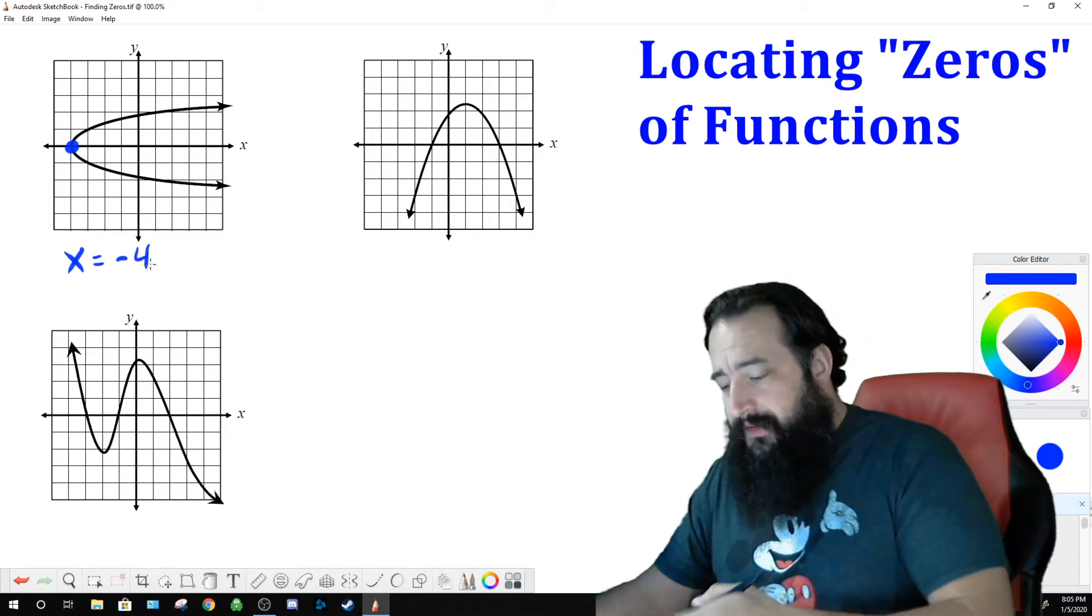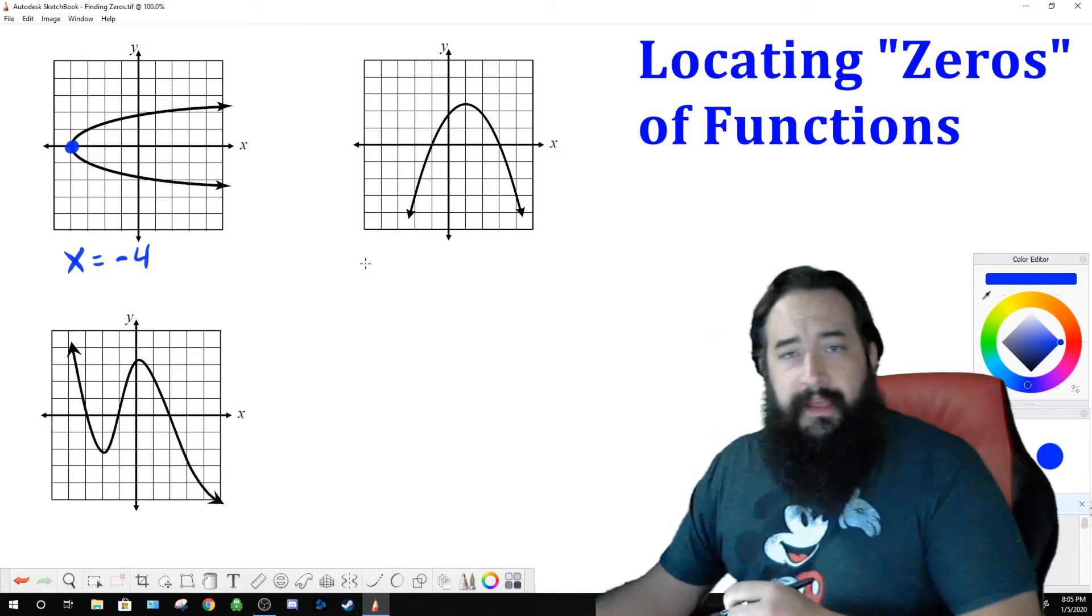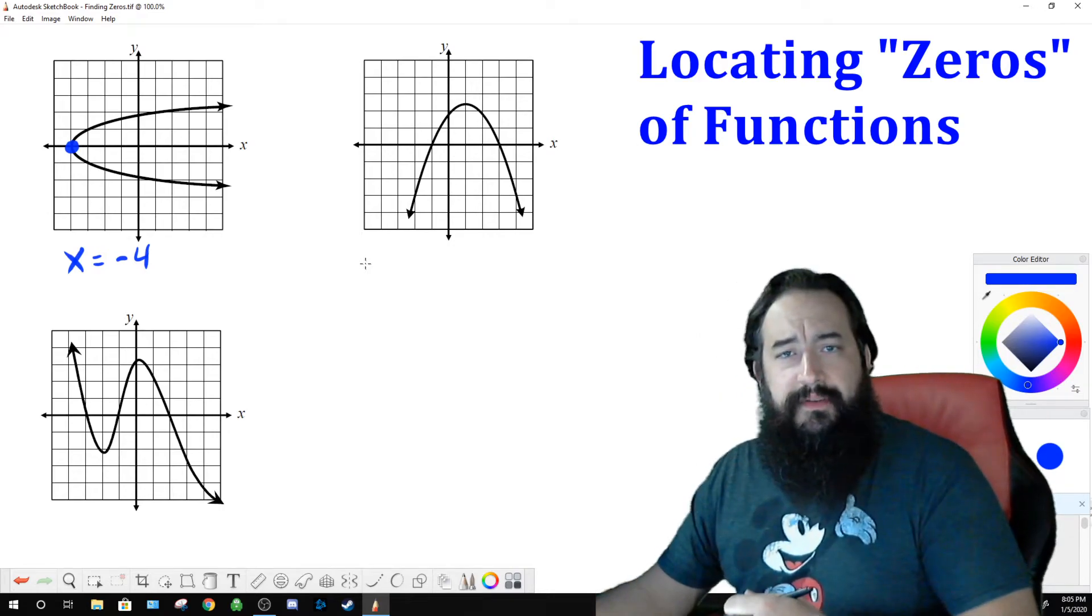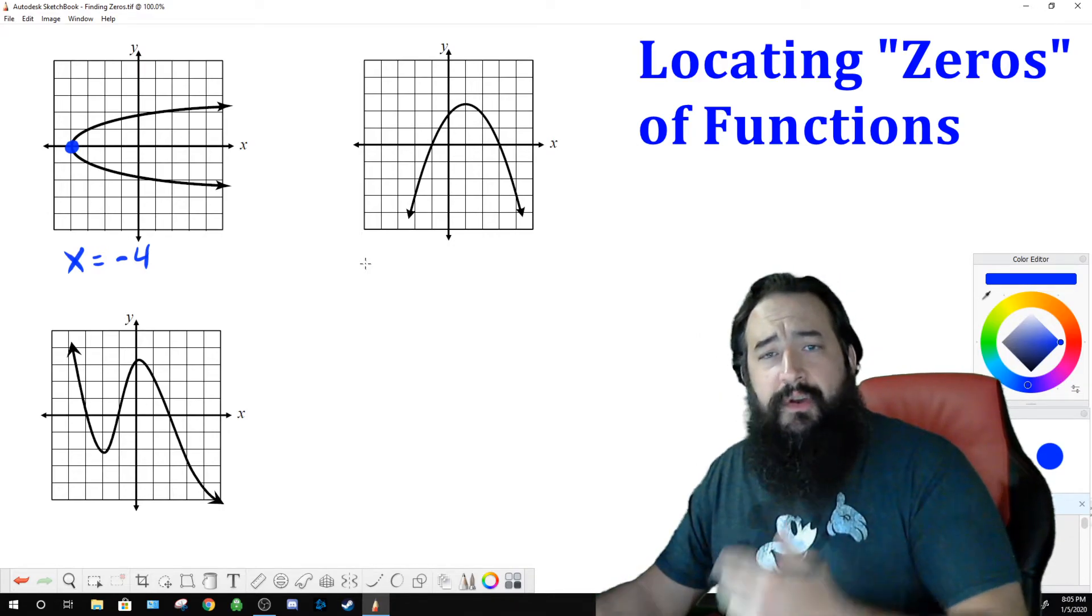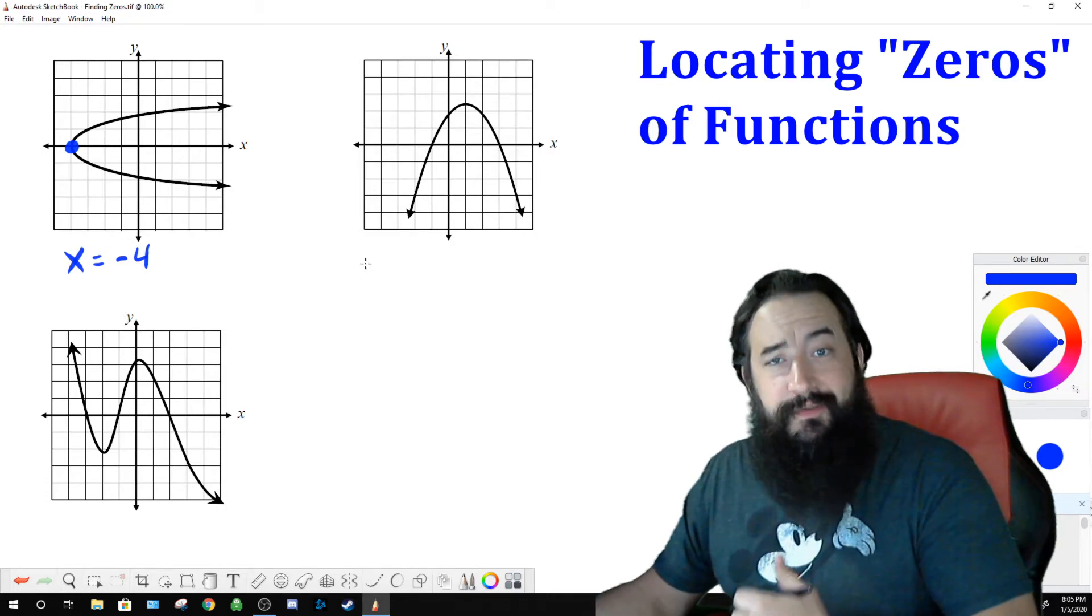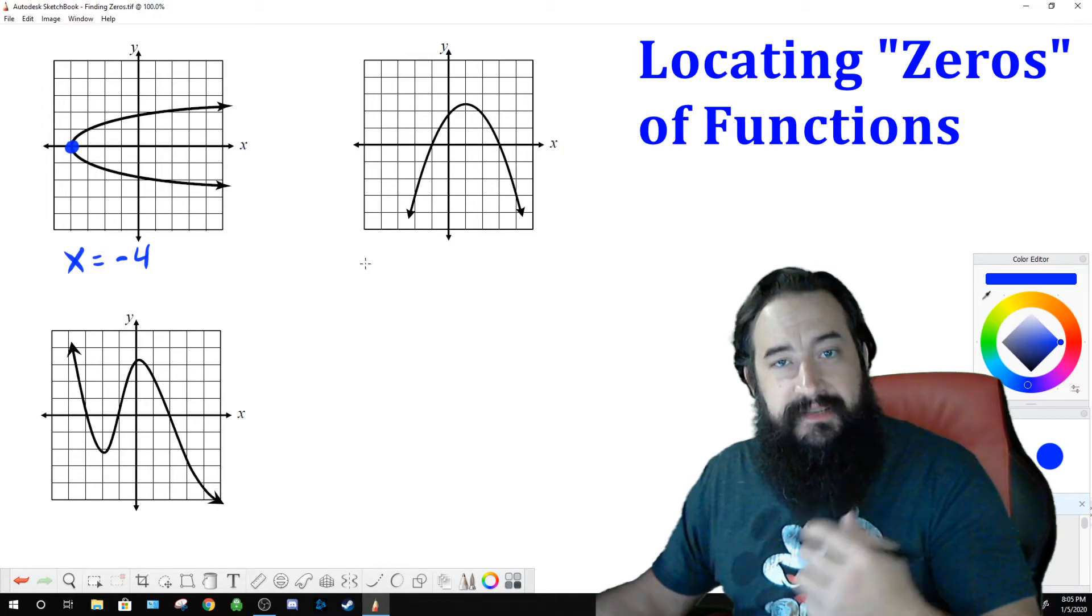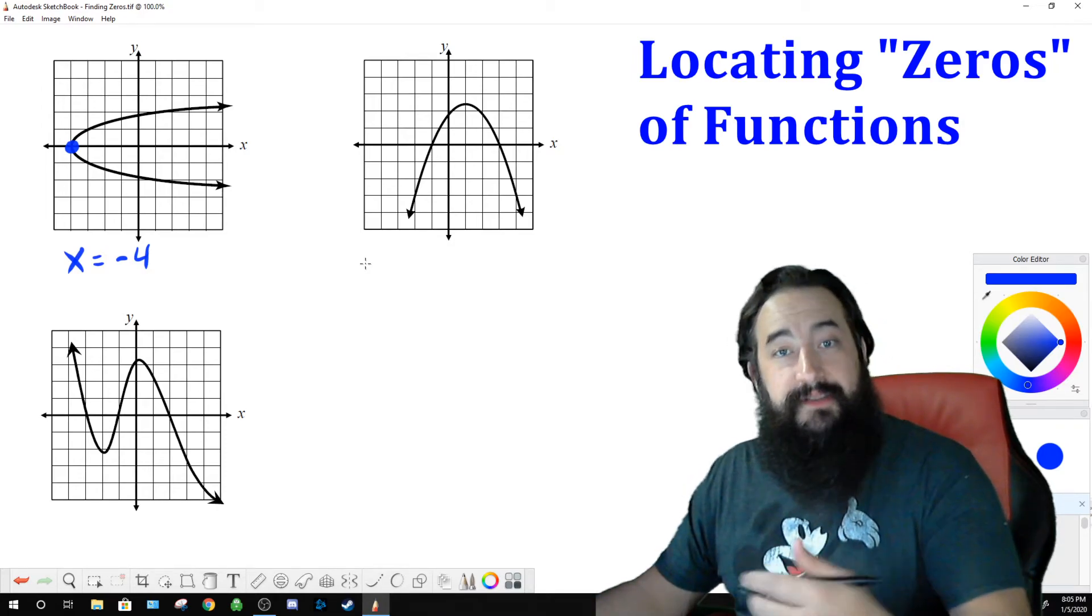Let's move on to this next one over here. We have an upside-down parabola, or I guess it's still called a parabola. So this is a quadratic function, and it's crossing the x-axis twice. All we have to do is figure out where it's crossing the x-axis, what x value, and that's it. That's our zero, or those are our zeros because there's more than one.